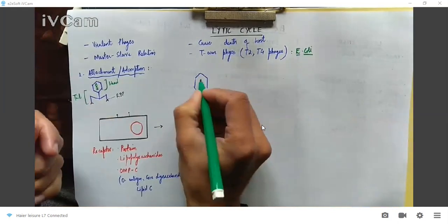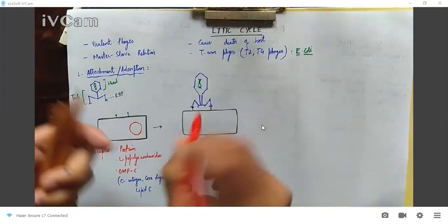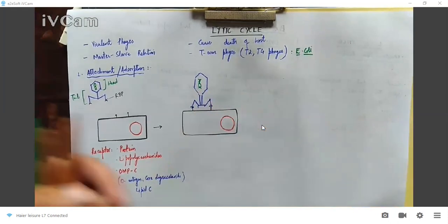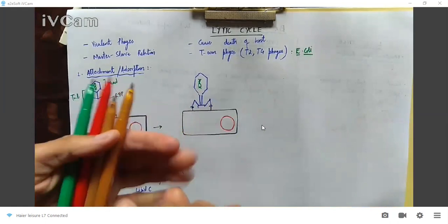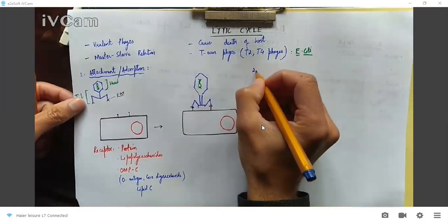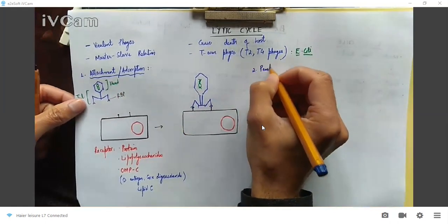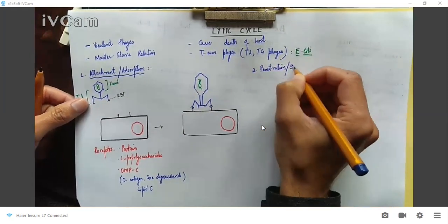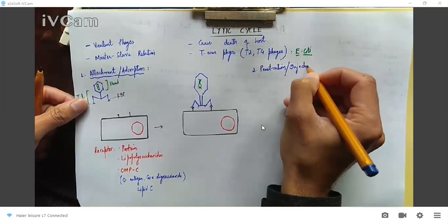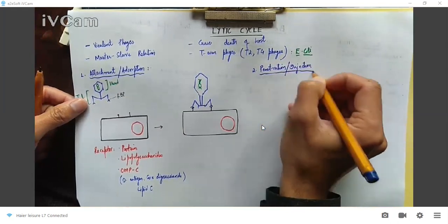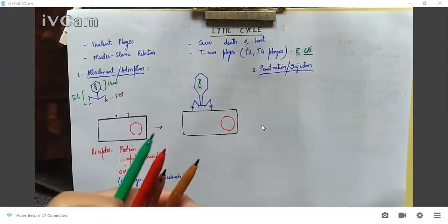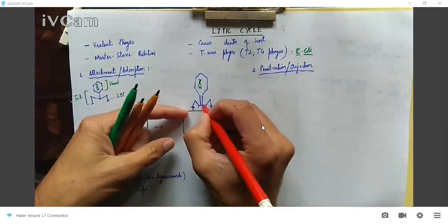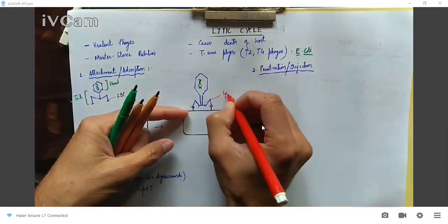After attachment, the next step is penetration, which involves injection of the viral DNA into the bacterium. In the tail region there is an enzyme called lysozyme, which creates holes in the bacterial cell wall.